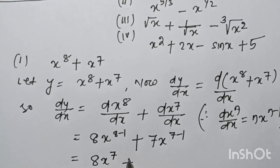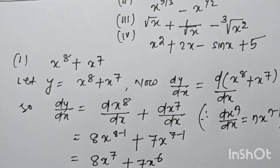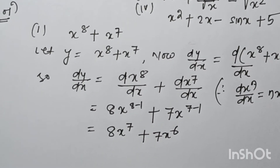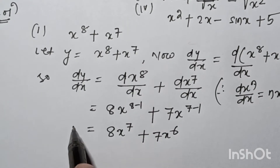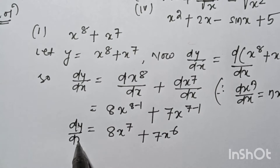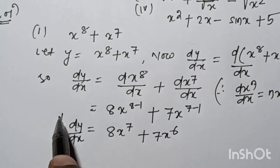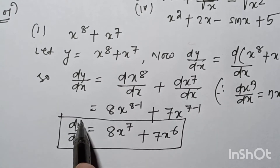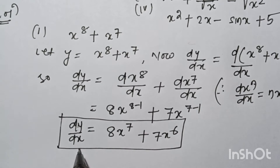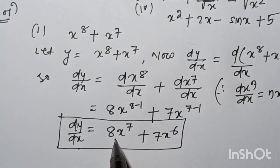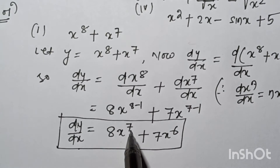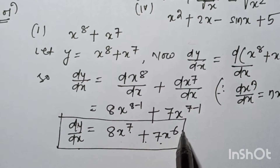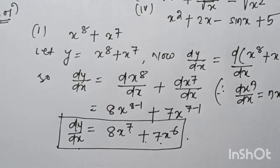So the differentiation, or derivative, dy/dx is equal to 8x⁷ plus 7x⁶.